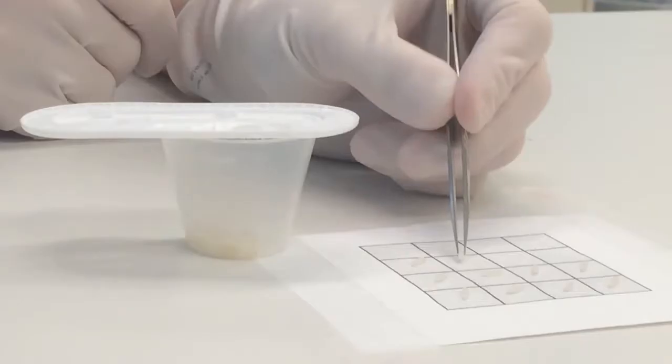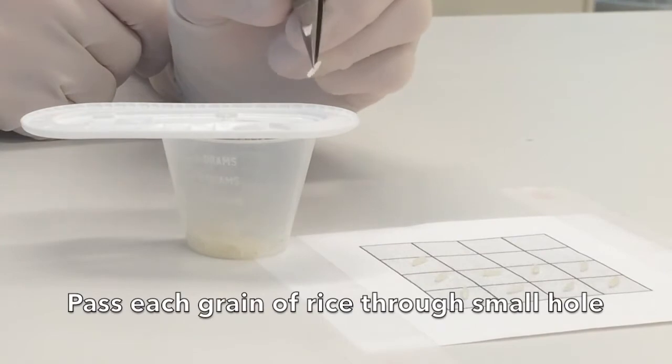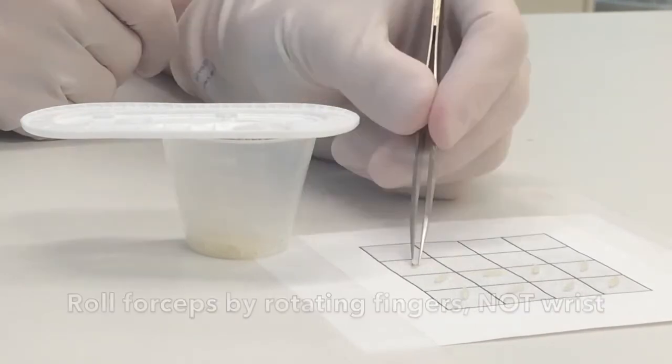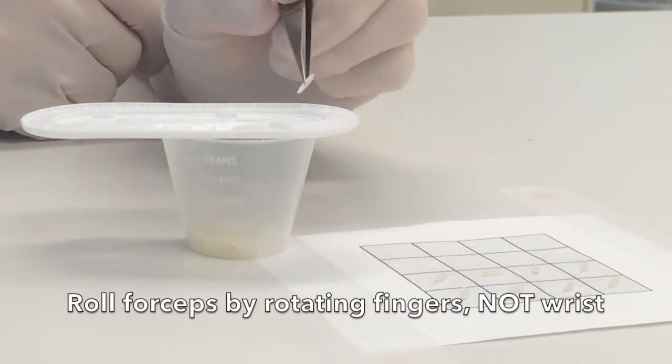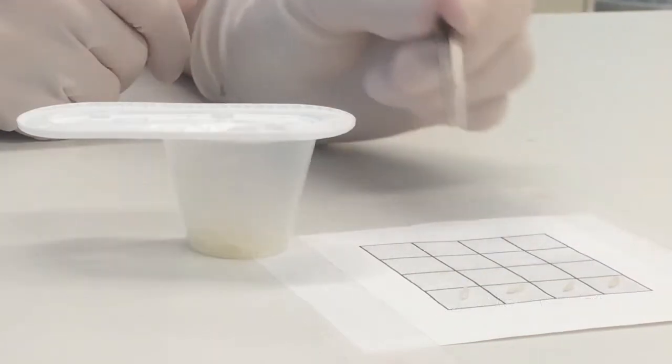Model 6 is the rice transfer via hole exercise. Using the micro forceps, pass each grain of rice through the small hole. It is important to roll the forceps by rotating the fingers, not the wrist.